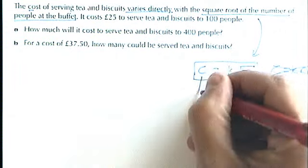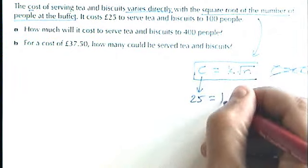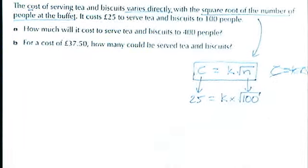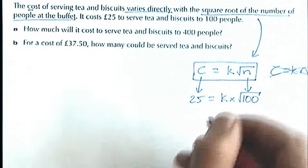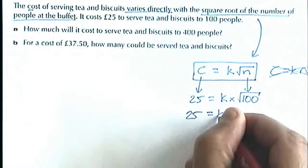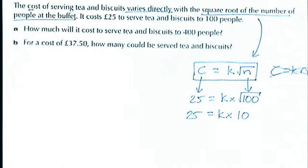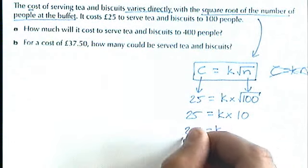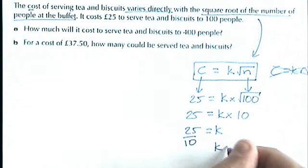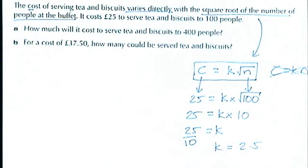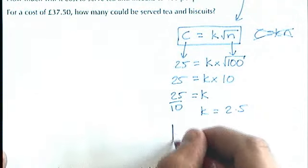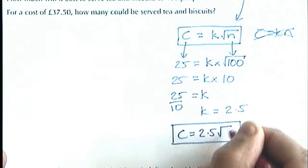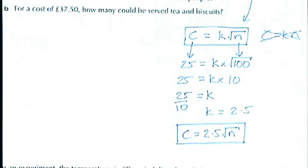Let's put some numbers in. We know the cost is £25 when seating 100 people. So: 25 = K × √100. The square root of 100 is 10, so we divide by 10 to work out K, which is 2.5. We then rewrite the formula with K included: C = 2.5√N. That's now our working formula.